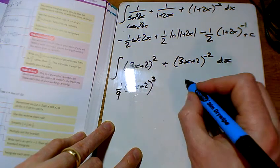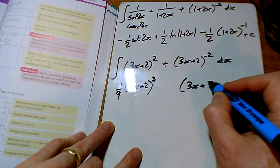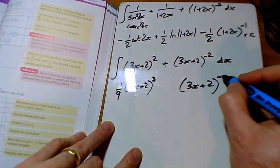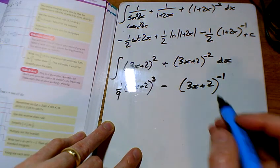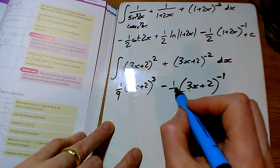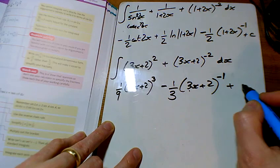So the bracket will stay the same, the power goes up to minus 1, we'll divide by that and we'll divide by the number of x's as well, so I've got 1 third there.